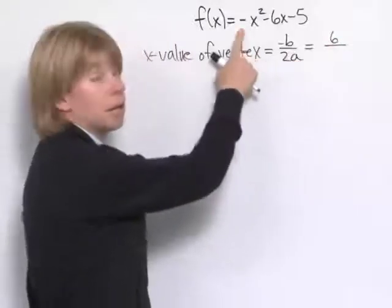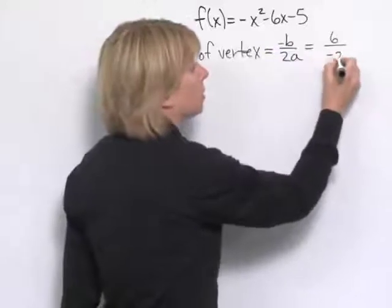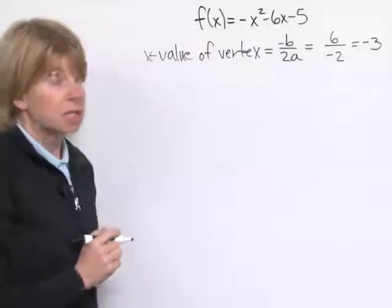2 times a. Here a is -1, so 2 times -1, we get -2. So our x-coordinate of the vertex is -3.